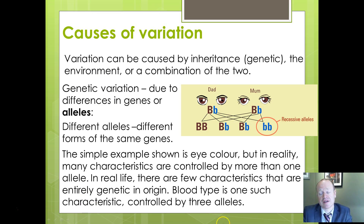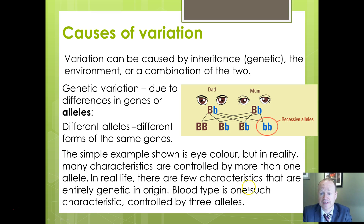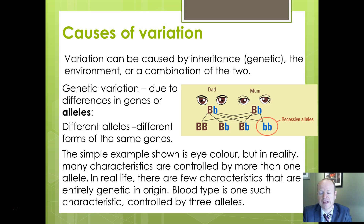So, causes of variation. Back at GCSE you'll have covered inherited and environmental — what we're now calling genetic and environmental variation. Genetic variation can be due to differences in genes. You might have different forms of the same gene — different alleles — eye colour being the classic example. In real life it's much more complicated: blood type is controlled by three alleles (A, B and O). There are also alleles that interact and dihybrid inheritance — those will be covered in the second year of A-level.